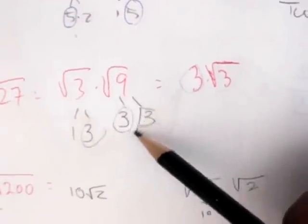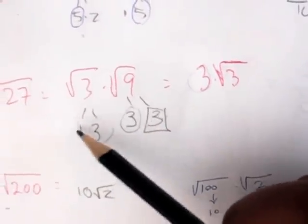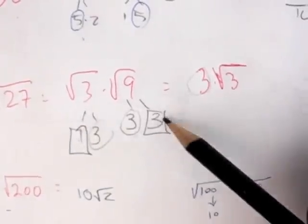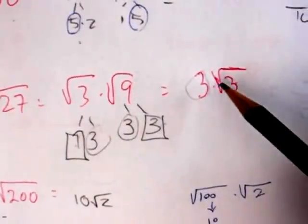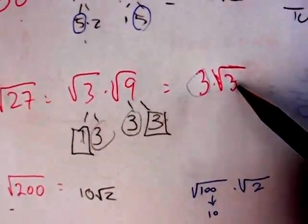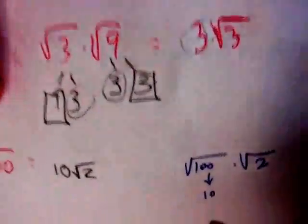And we have one 3 left. 1 times 3 over here. Multiply that. It's 3. Which is why the 3 is inside of the square root. Great. Yeah, I see.